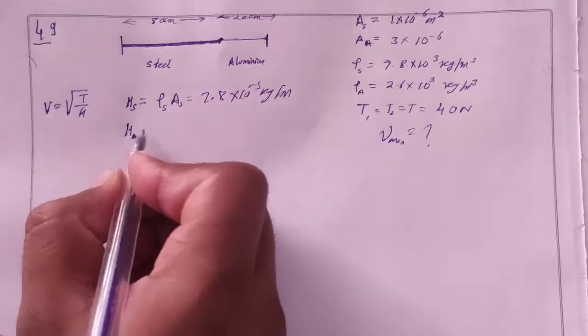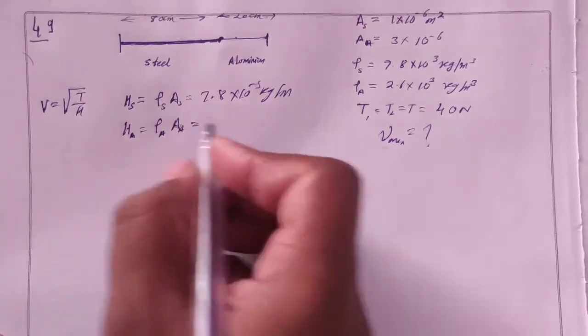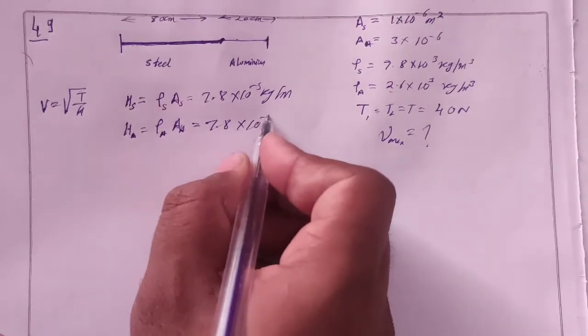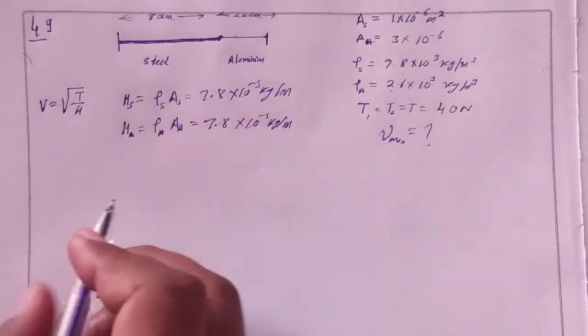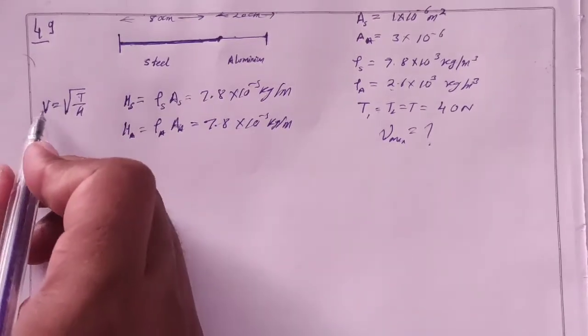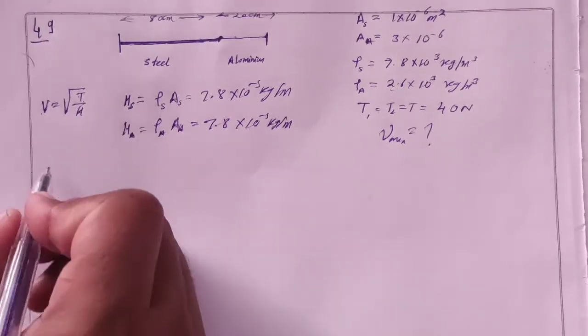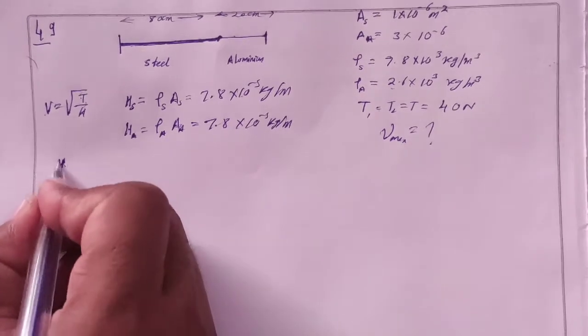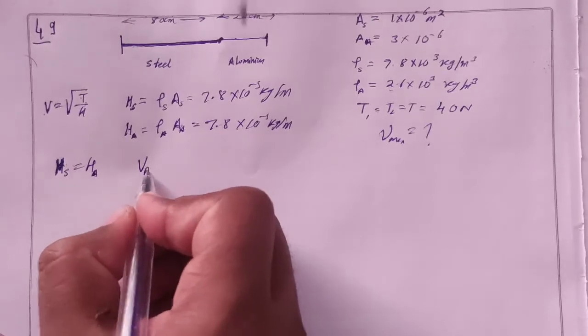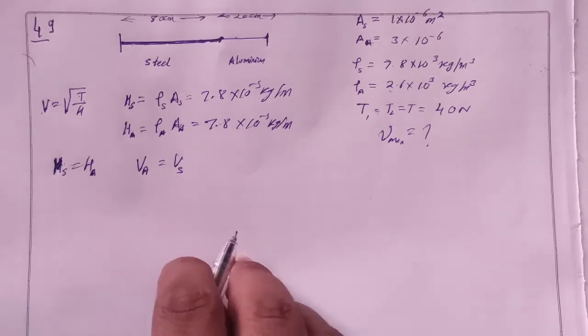If we look at mu aluminum, then we know rho of aluminum times area of aluminum. This also equals 7.8 into 10 to power minus 3 kg per meter. This means that mu steel is equal to mu aluminum. This is why I can say that velocity of aluminum is equal to velocity of steel. Velocity is the same.